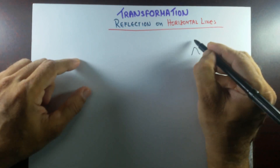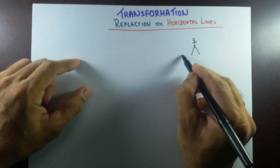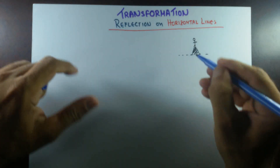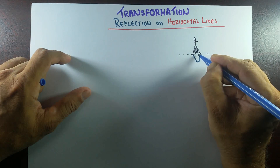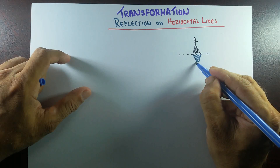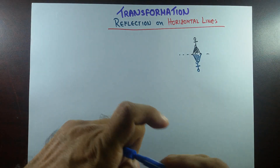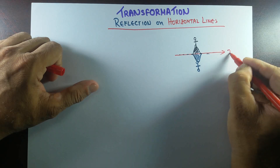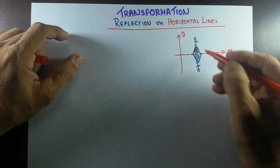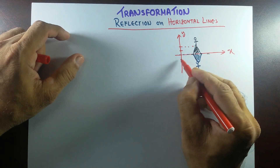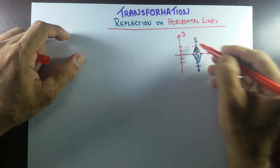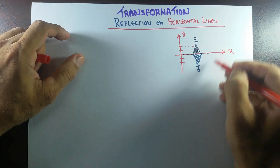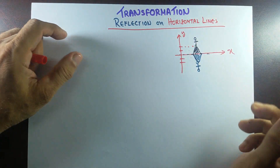Let's say you are standing on the top of a mountain, and there is water. You will have this reflection of the mountain, and this would be your reflection. If you consider this reflection line to be the x-axis, your image would be exactly on the opposite side of your object. Your object is 2 units above the x-axis, so your image would be 2 units below the x-axis. This is an example of reflection on a horizontal line.